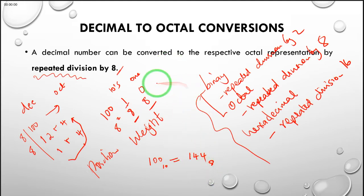If you want to look at the position weights, you can see that this has position 8 to the power 0, 8 to the power 1, and 8 to the power 2. Therefore, if you want to convert it back to decimal, you'd say it's 4 times 8^0 plus 4 times 8^1 plus 1 times 8^2.